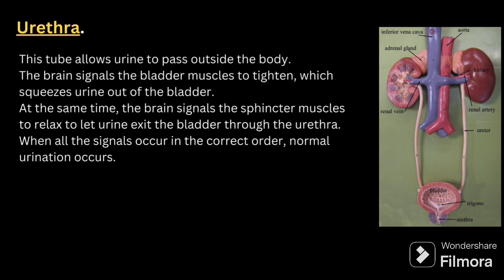The urethra is a tube that allows urine to pass outside the body. The brain signals the bladder muscles to tighten, squeezing urine out of the bladder. At the same time, the brain signals the sphincter muscles to relax, letting urine exit the bladder through the urethra. When all these signals occur in the correct order, normal urination takes place. That covers all parts of the urinary system: kidney, ureter, bladder, and urethra, including the nephrons as the functional unit of the kidney.